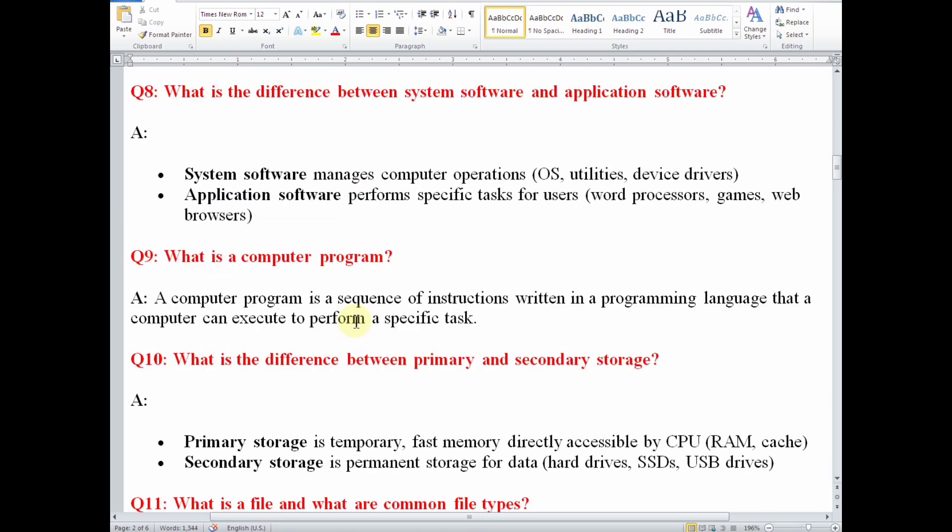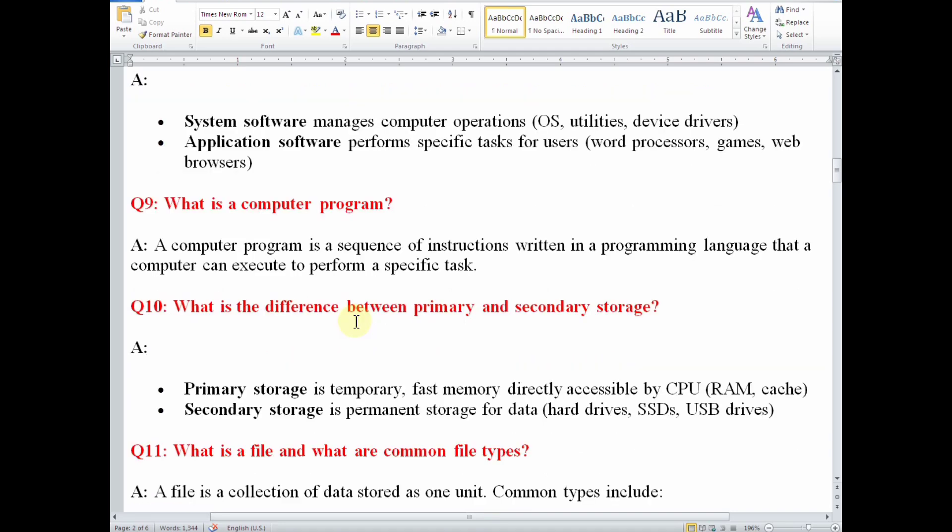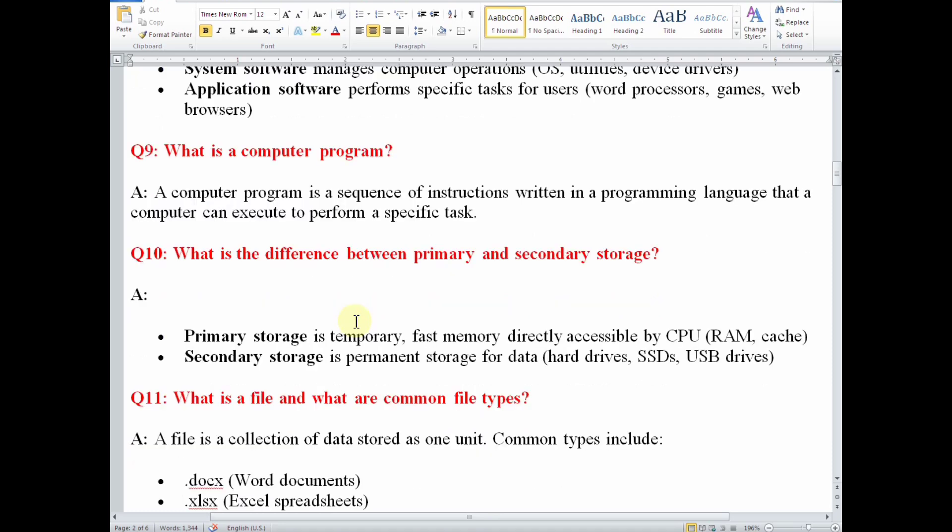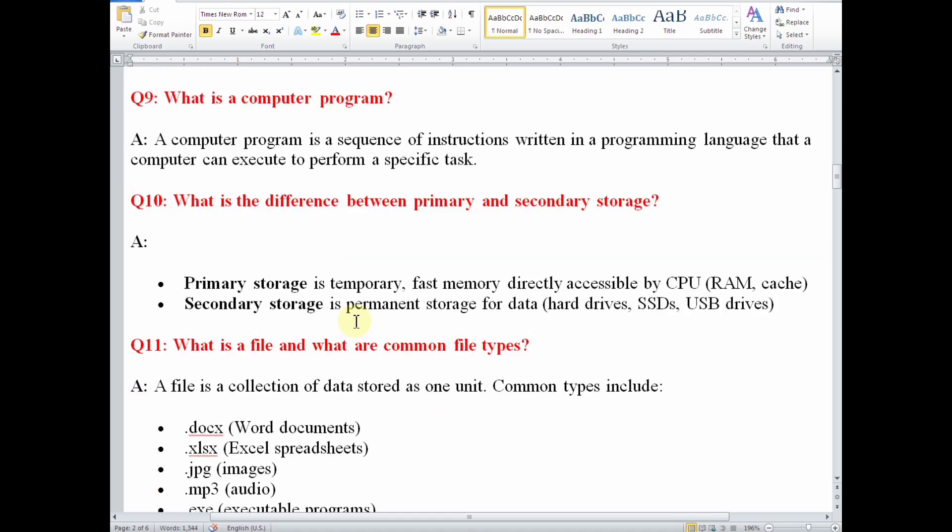Number nine, what is a computer program? A computer program is a sequence of instructions written in a programming language that a computer can execute to perform a specific task. Number 10, what is the difference between primary and secondary storage? Primary storage is temporary fast memory directly accessible by CPU, such as RAM cache. Secondary storage is permanent storage for data like hard drives, SSDs, USB drives, and other examples.